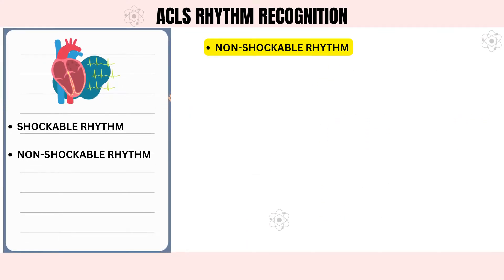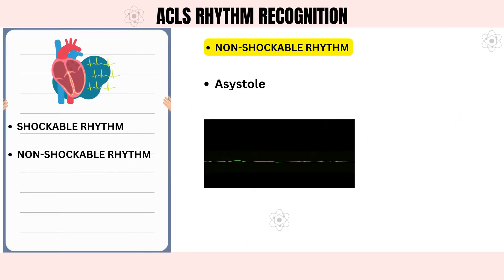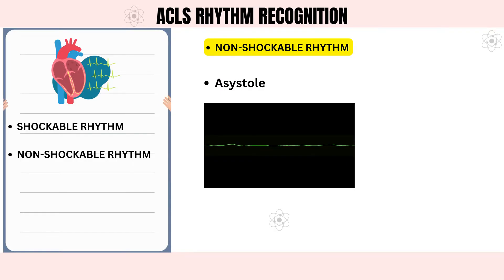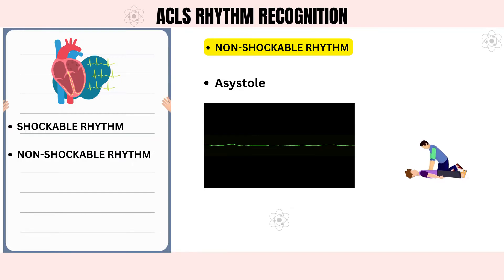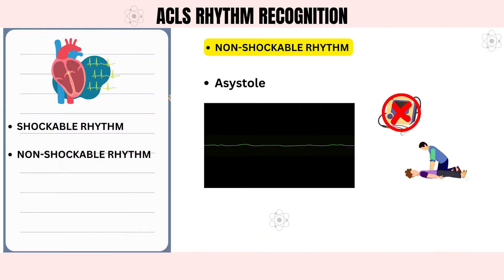Now let's look at the rhythms that are not shockable. First, asystole indicates that the electrical system of the heart has shut down and there is no beating. Asystole can be caused by untreated ventricular tachycardia or VF. Whenever someone goes into asystole, CPR should be started right away to give them the best chance of survival. If an asystole rhythm is detected by an AED, it will not deliver a shock, because defibrillation is not a viable treatment option.